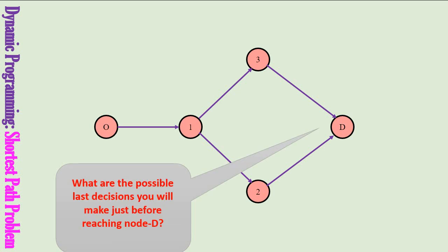Let us say you are reaching node D. What are the possible decisions that you have made before reaching node D? Most probably, it will be either going from node 3 to D or going from node 2 to D. The last possible decisions made to reach city D will be part of the stage 1 problem.